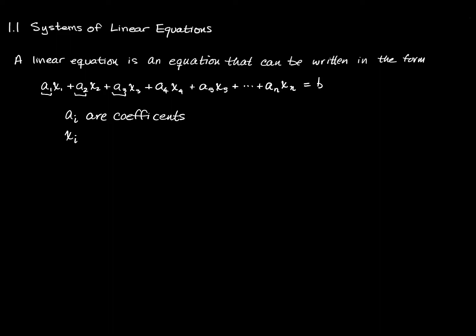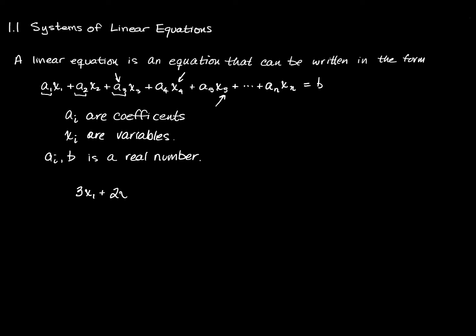The x sub i — I'll talk about the i-th term, the i-th coefficient, or the i-th variable, with i being just a generic index, a generic number. X sub i are the variables. B is a number, and all the a's are also real numbers. So that's what a linear equation is. Here's an example: 3x₁ + 2x₂ = 7. This is a linear equation because it can be written in the form a₁x₁ + a₂x₂ = b.